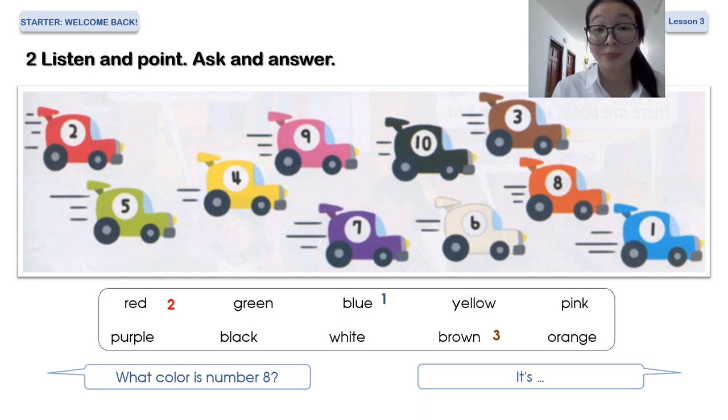And number 4, what color is number 4? It's yellow. And number 5, what color is number 5? Can you see it clearly? Number 5 is green.